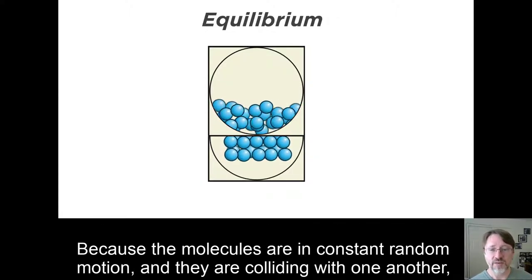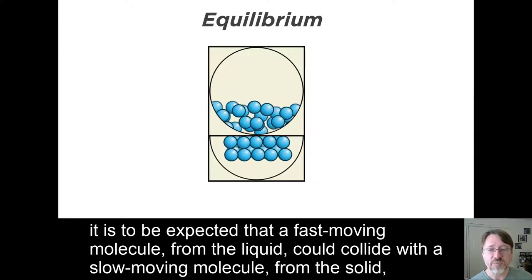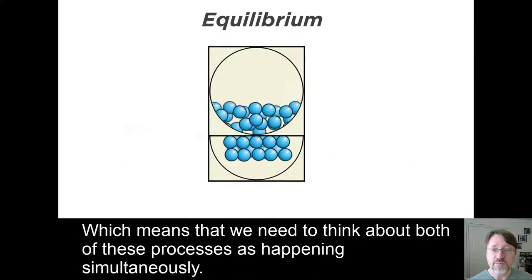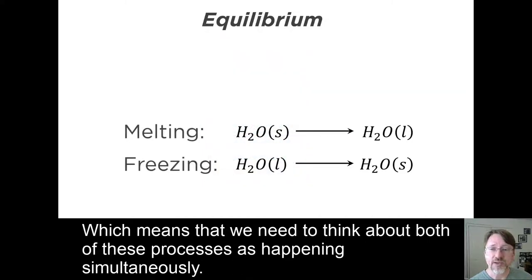Because the molecules are in constant random motion, and they are colliding with one another, it is to be expected that a fast moving molecule from the liquid could collide with a slow moving molecule from the solid, and transfer enough energy for the first one to freeze in place, and the second to gain enough energy to start moving. Which means that we need to think about both of these processes as happening simultaneously.